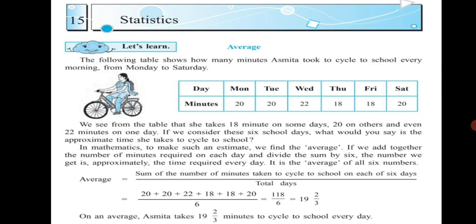The following table shows how many minutes Asmida took to cycle to school every morning from Monday to Saturday. The time is shown in minutes here. We see from the table that she takes 18 minutes on some days, 20 on others, and even 22 minutes on one day. If we consider the 6 school days, what would you say is the approximate time she takes to cycle to school?